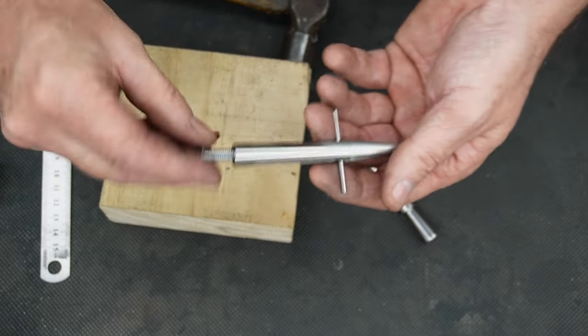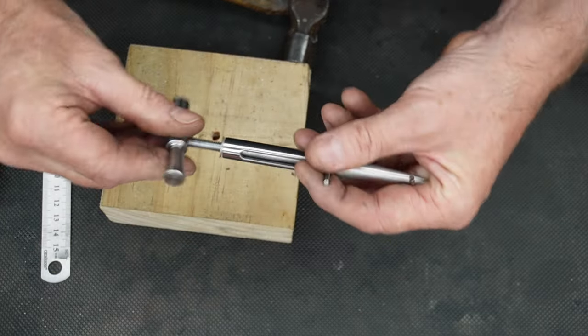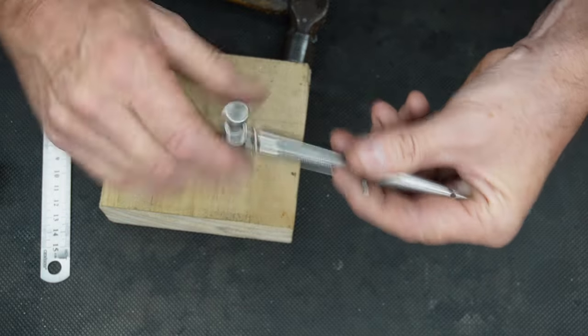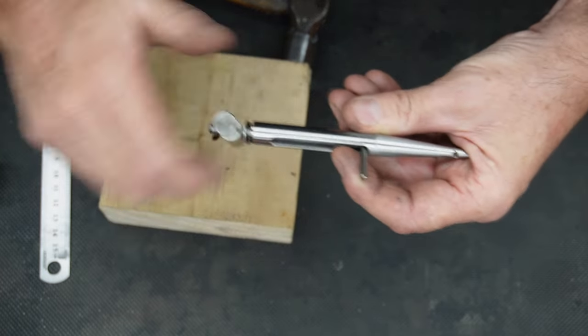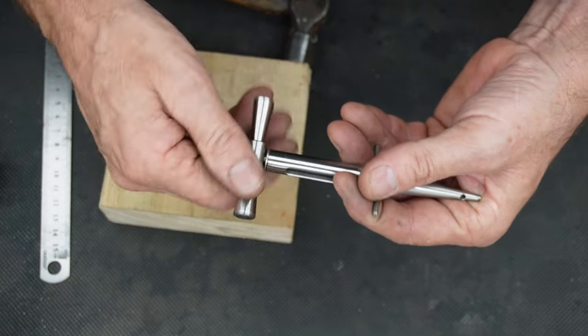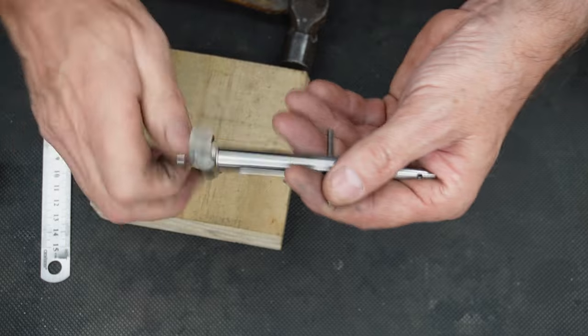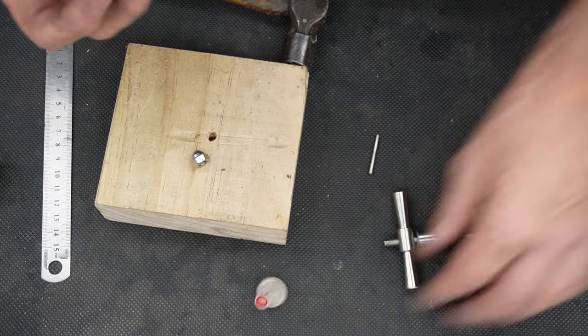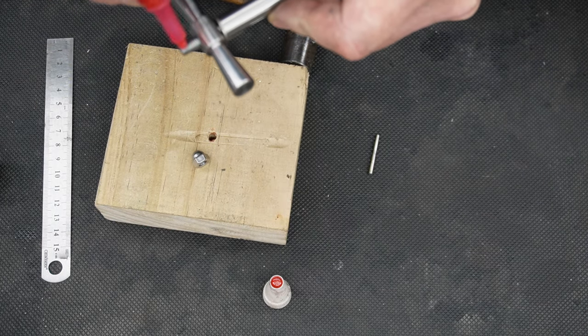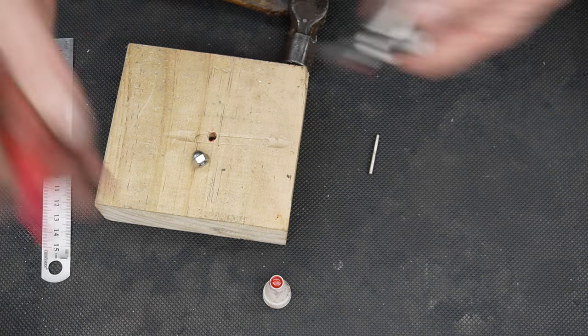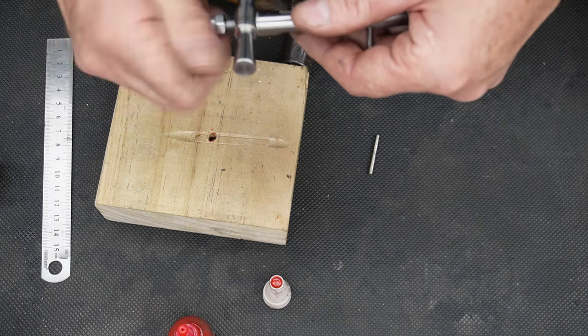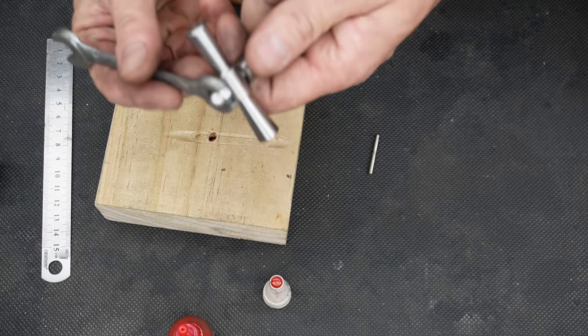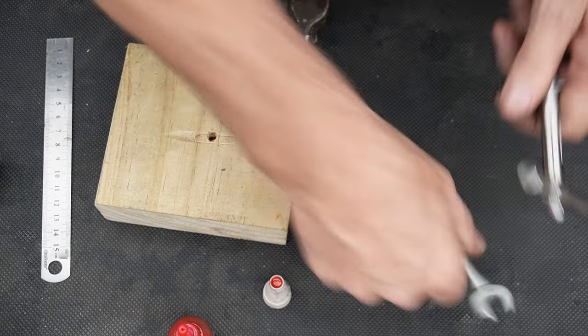That first piece in. Then we put our washer on, thread on our main handle, and then our dome nut on top of that. A little bit of loctite on that as well, I don't want that to come loose. Bit of huffing and puffing going on. Okay.